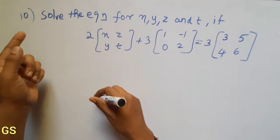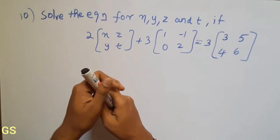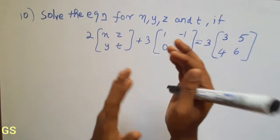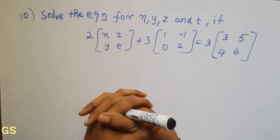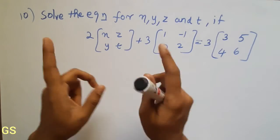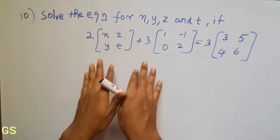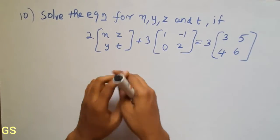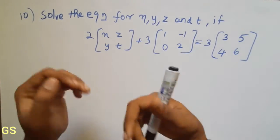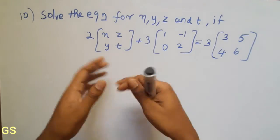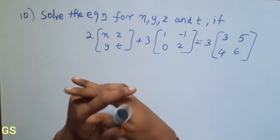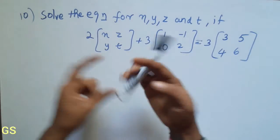Friends, what are we going to talk about in this video? Exercise 3.2 — not just the 10th sum, but also the 11th sum and 12th sum. We are going to take the timer. You already put the thumbnail in the video. We will take the sum.